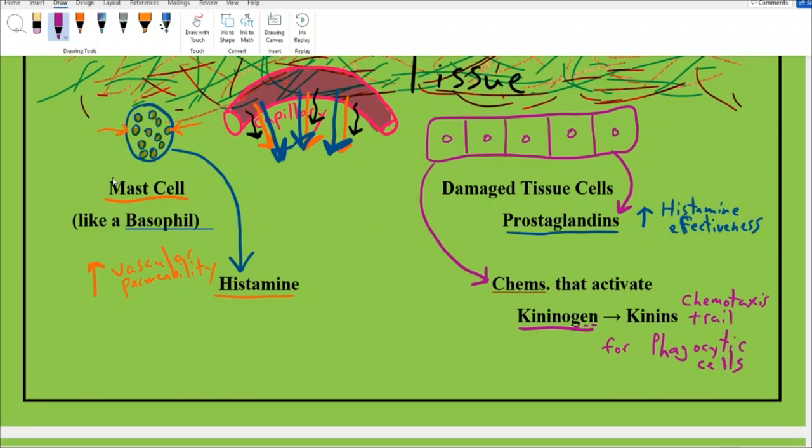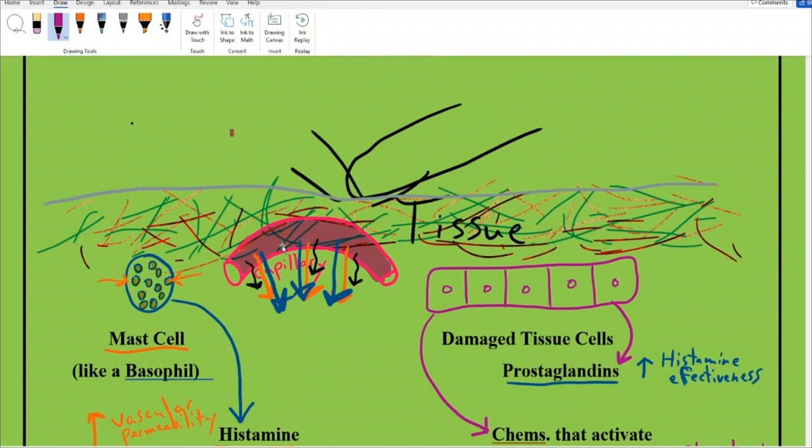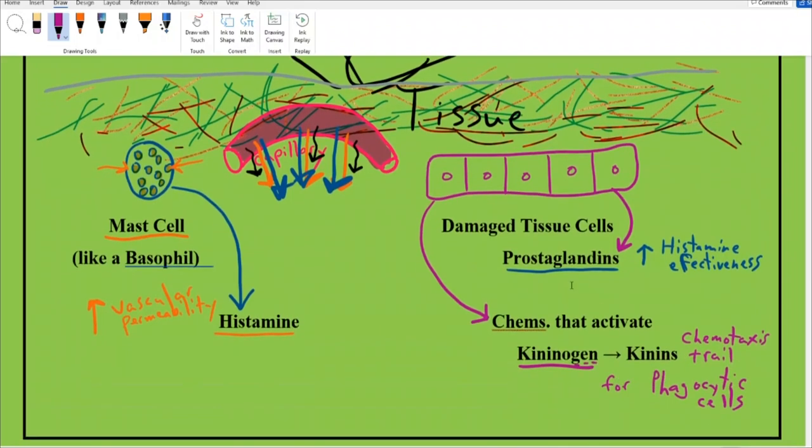The kinins are a group of proteins that will serve as a chemotaxis trail for neutrophils and macrophages, essentially phagocytic cells. I want to pause here to set the stage. My tissue has been hit by a stick. The mast cell releases histamine. The damaged tissue cells release prostaglandins and chemicals that activate kinins.